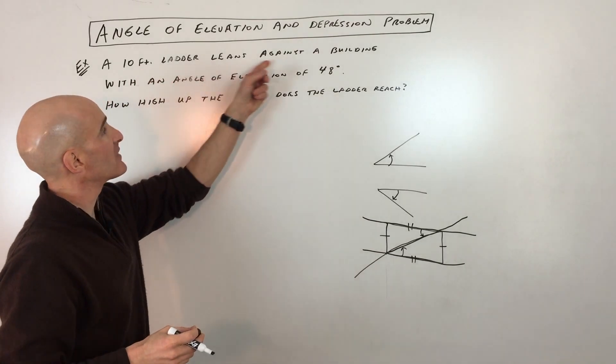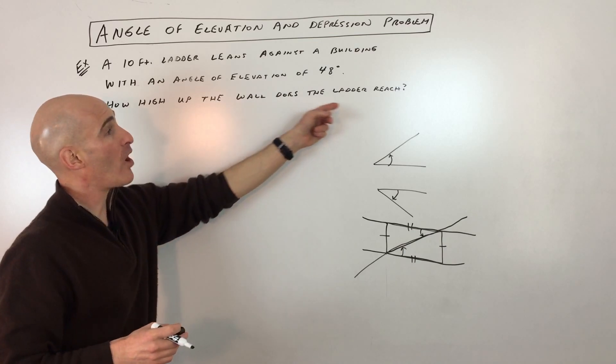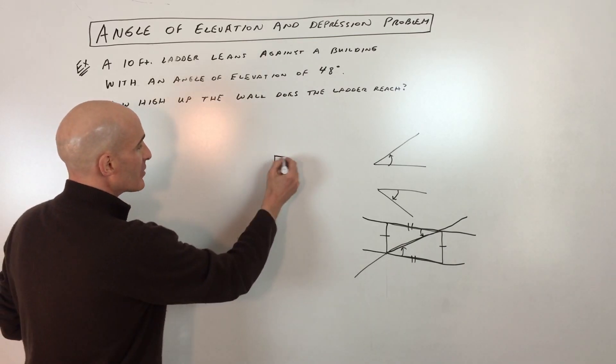So a 10 foot ladder leans against a building with an angle of elevation of 48 degrees. How high up the wall does the ladder reach? So let's just say this is our building here.